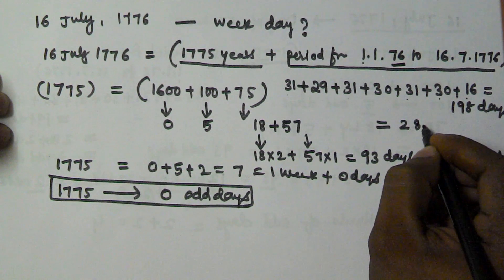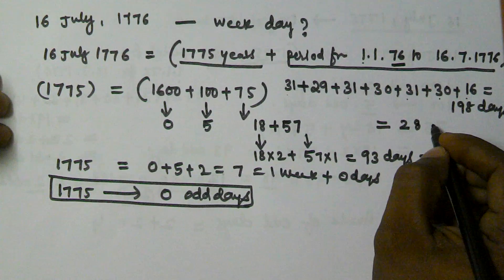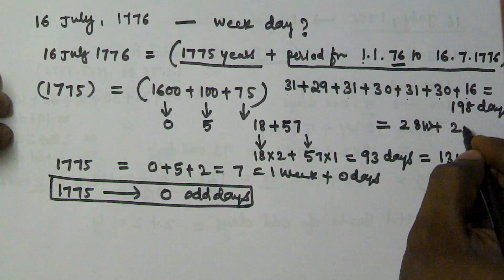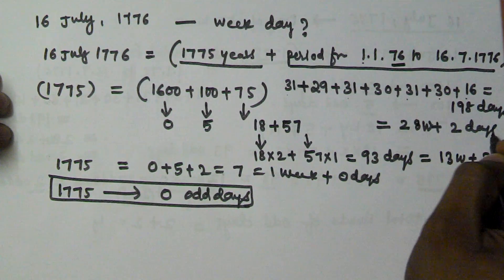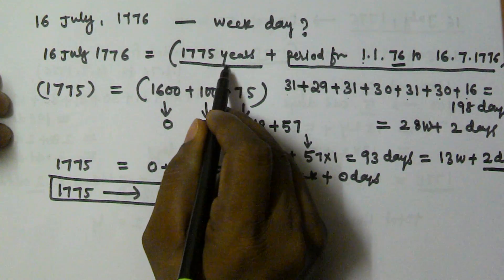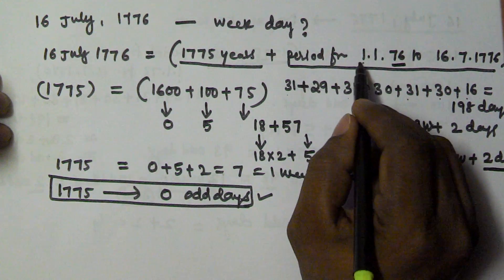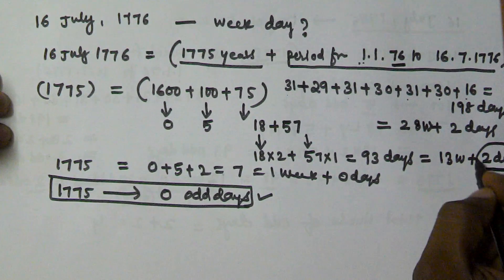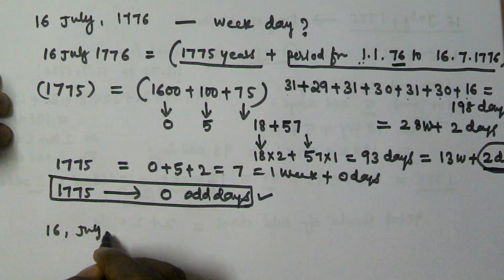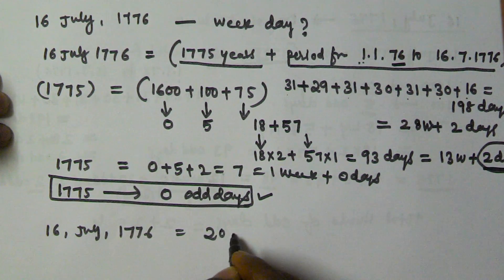Then we get remainder 2. That means 28 full weeks and 2 days. From period 0 years to 1775 years we got 0 odd days, and then from period 1st January to 16th we got 2 odd days. So total number of odd days till 16th July 1776 is equal to 2 odd days.